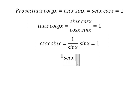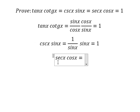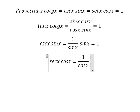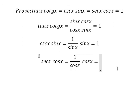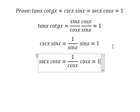And the last one: secant(s) multiplied by cosine(s). We know that secant(s) is one over cosine(s), multiplied by cosine(s). This one divided by this one gives you one. This is the end — thank you for watching.